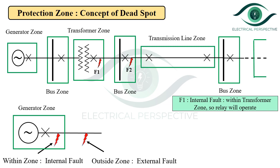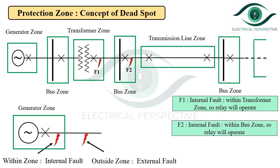Now consider fault F2. F2 is an internal fault as it is occurring within the bus zone. So the relay and the circuit breaker within the bus zone will operate to isolate the faulty section.